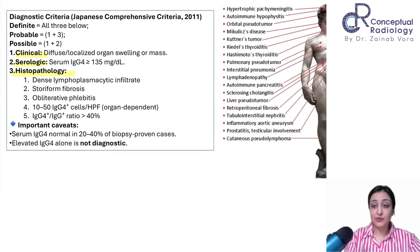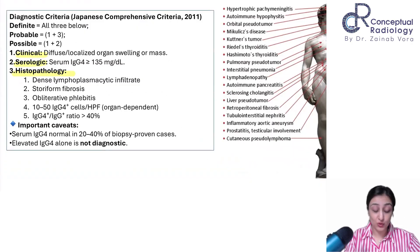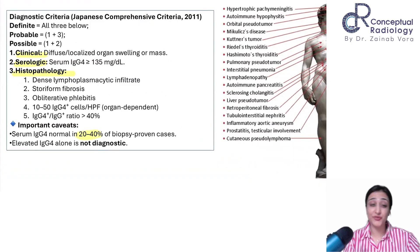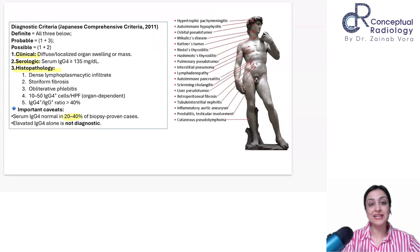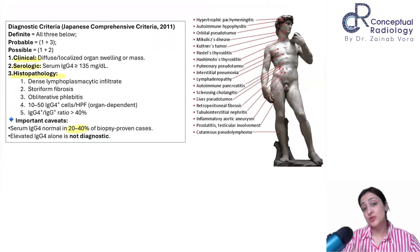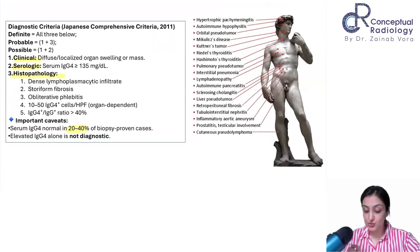One important takeaway: IgG4 can be normal in almost half of patients. This makes biopsy a very important tool. When in doubt, do a biopsy — that's the moral of the story.